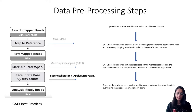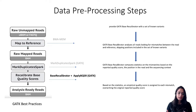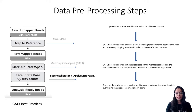Unfortunately, quality scores produced by machines are subject to various sources of systematic technical error, which can lead to over- or underestimation of quality scores. These errors are due to the physics or chemistry of how the sequencing reaction works, and some are due to manufacturing flaws in equipment. Base quality score recalibration (BQSR) applies machine learning to model these errors and adjust quality scores accordingly, improving the accuracy of variant calls.